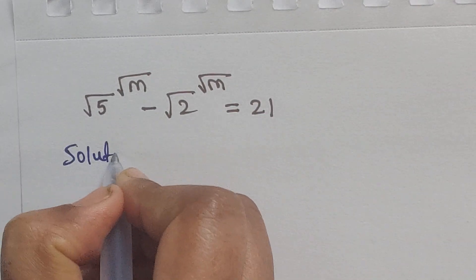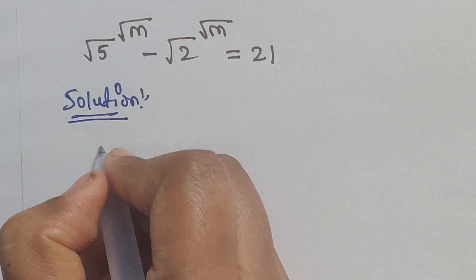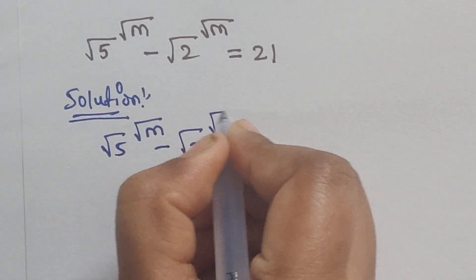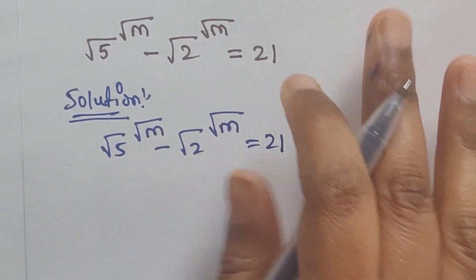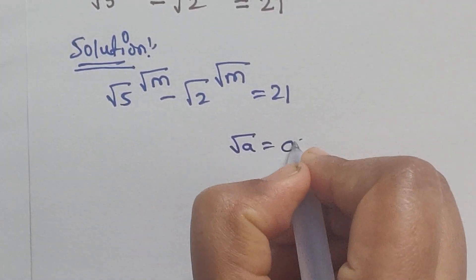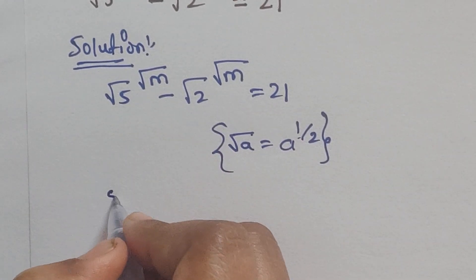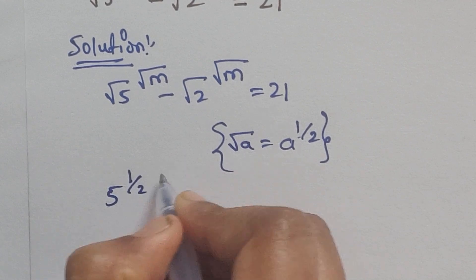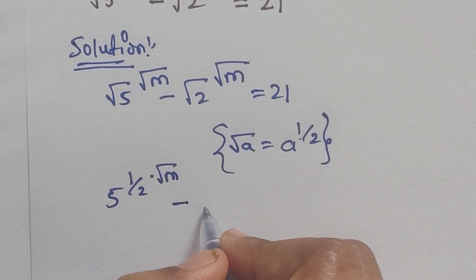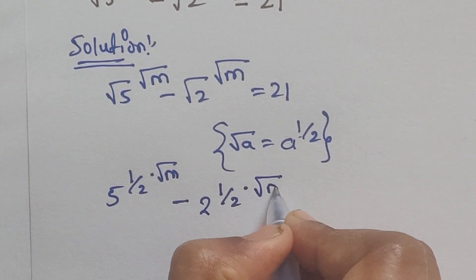Solution. Square root of 5 to the power of square root of m, minus square root of 2 to the power of square root of m, equals 21. We can write square root of a as a to the power of 1/2. Using this formula, we can write 5 to the power of 1/2 times square root of m, minus 2 to the power of 1/2 times square root of m, equals 21.